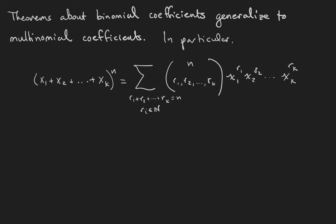All those theorems we've learned about binomial coefficients generalize to multinomial coefficients as well, including the recurrence relation and the binomial theorem. To be specific, if we take the polynomial x1 plus x2 plus dot dot dot plus xk and raise it to the nth power, we get the sum of all possible products of x1, x2, etc, xk whose powers sum to n, and the coefficients on each of those terms is going to be the appropriate multinomial coefficient.